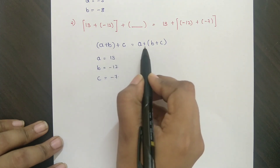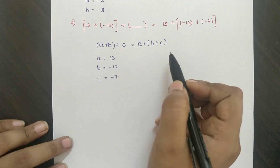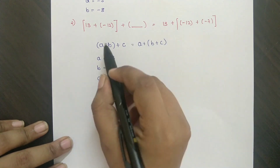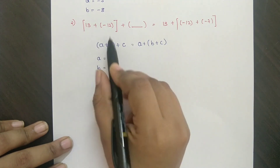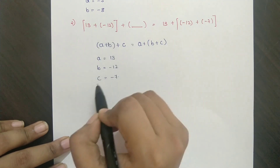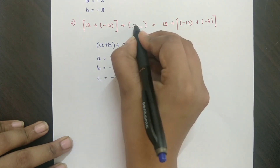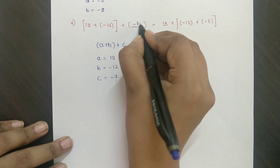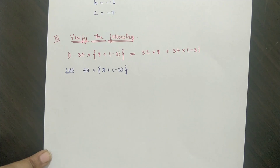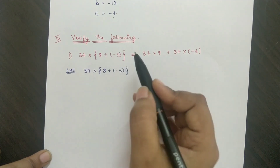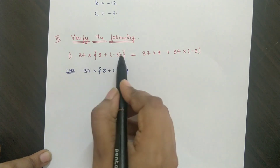The given question is in the form of a plus b plus c equals a plus b plus c, which is the associative property. So a equals 13, b equals minus 12, c equals minus 7. Put minus 7 here.